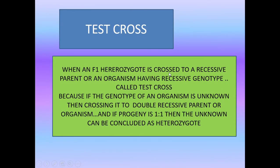When an F1 heterozygote is crossed to a recessive parent — an organism having a recessive genotype — it is called a test cross. If the genotype of an organism is unknown, crossing it to the double recessive parent tells us: if the progeny ratio is 1:1, the unknown organism is a heterozygote. The name 'test cross' comes from this — you are able to test something.